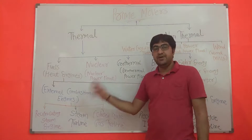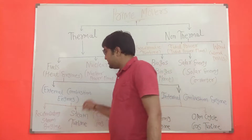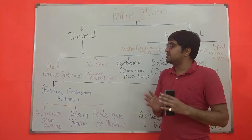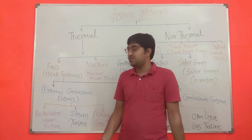We have already prepared videos on IC engines. The first type is the external combustion engine. In an external combustion engine, combustion takes place outside the combustion chamber. An example of an external combustion engine is a boiler, where combustion takes place outside the combustion chamber.